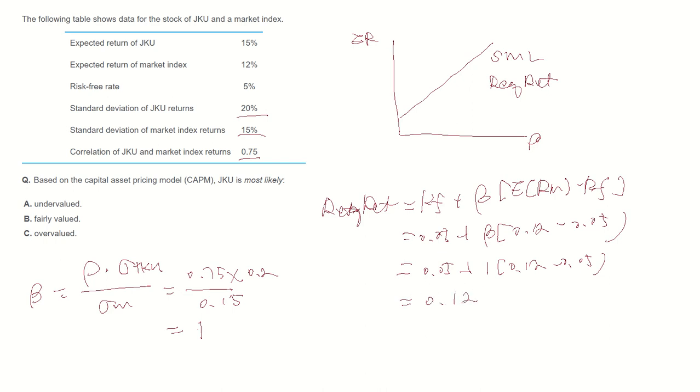So when the stock beta is 1, required return is 0.12. And the table provided expected return of stock is 15%, so expected return is above SML line.